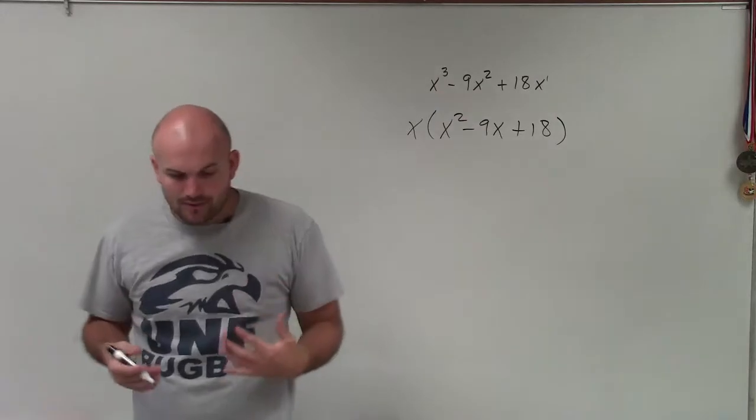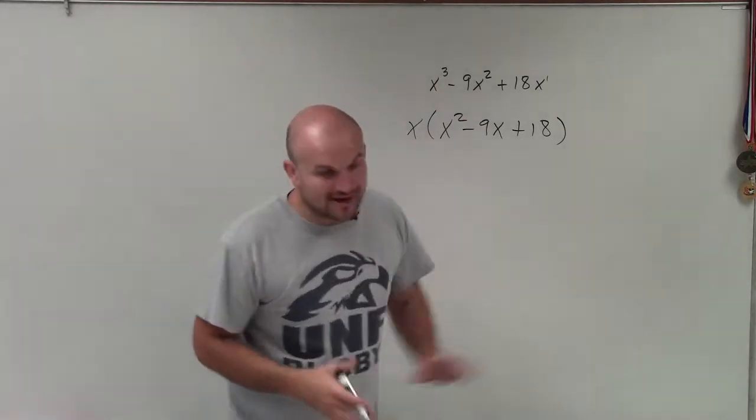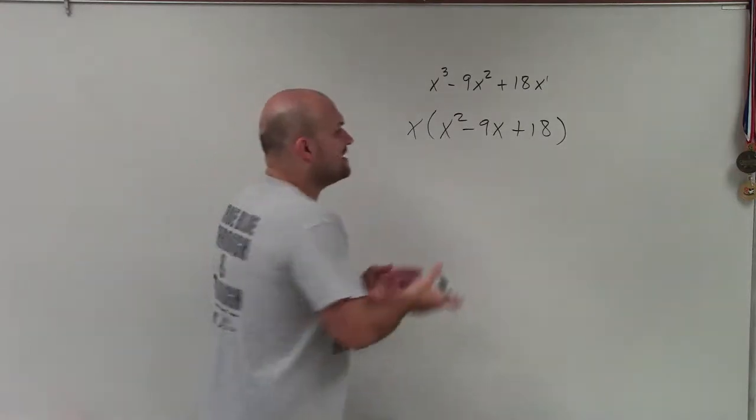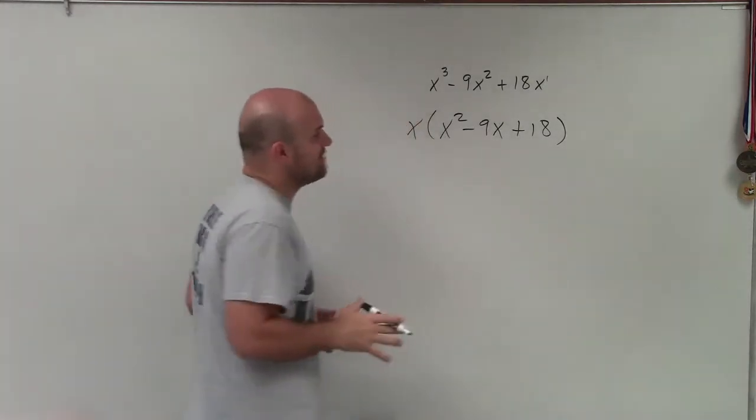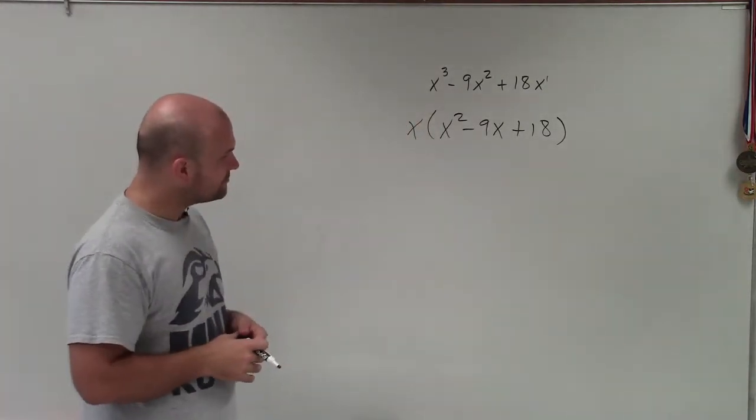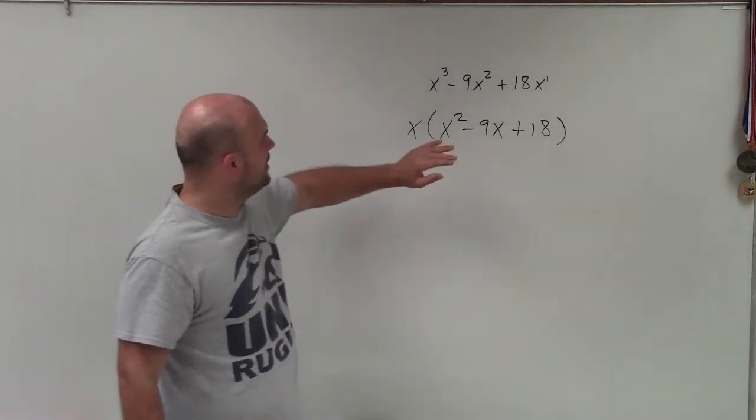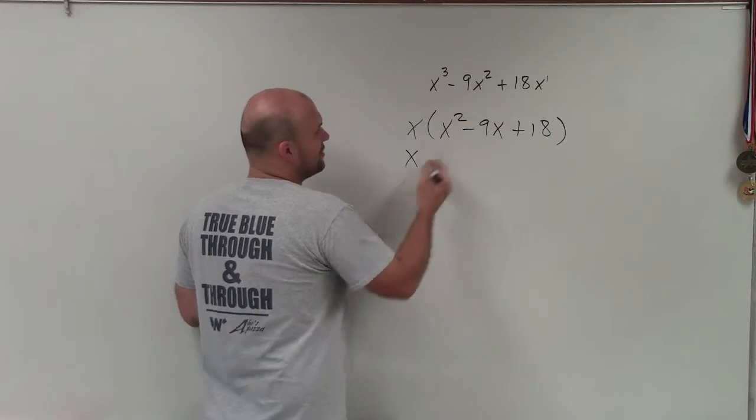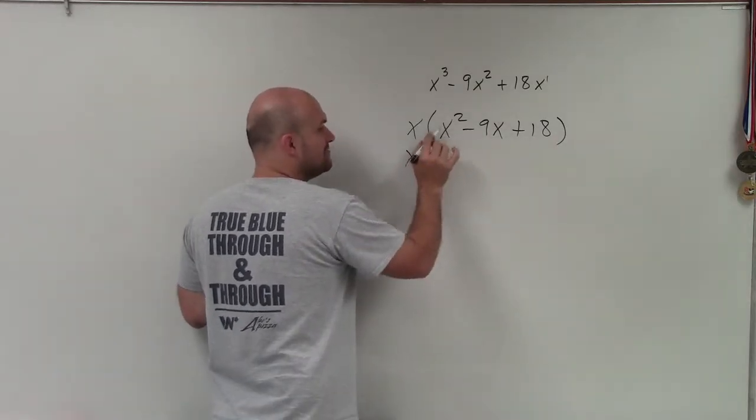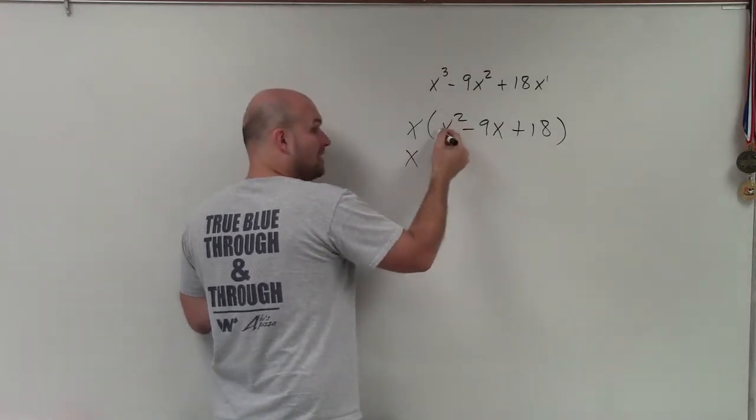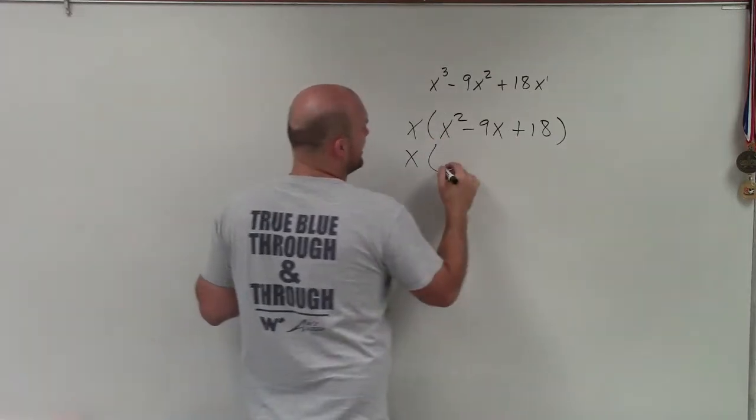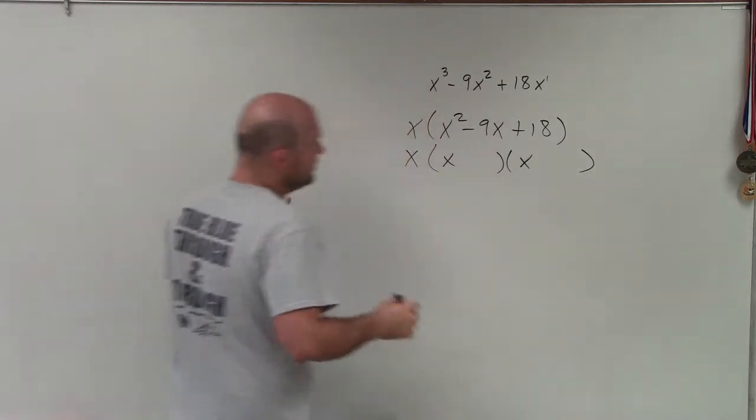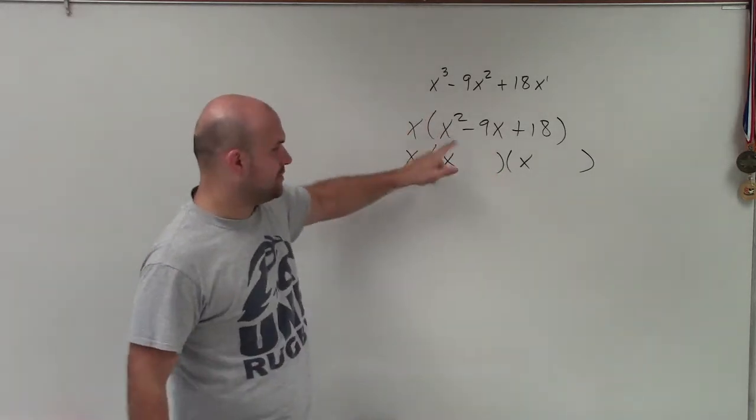Okay, so now we have a monomial times this trinomial. And we always want to look, can we still continue to factor this trinomial? Now factoring the trinomial is a little bit different than factoring out just a greatest common factor. When factoring a trinomial, especially when you have just an x squared or 1 is the coefficient of your quadratic term, then I know I can factor this down to two factors if it is possible. Because x times x gives me x squared.